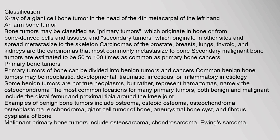Classification: An X-ray of a giant cell bone tumor in the head of the fourth metacarpal of the left hand. Bone tumors may be classified as primary tumors, which originate in bone or from bone-derived cells and tissues, and secondary tumors, which originate in other sites and spread (metastasized) to the skeleton.